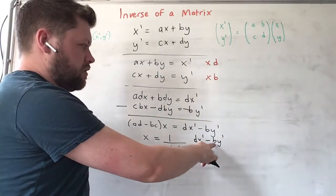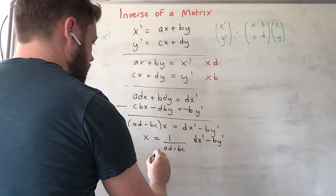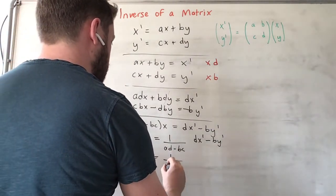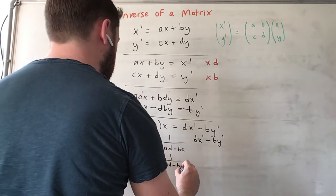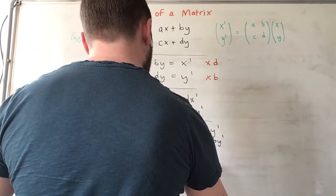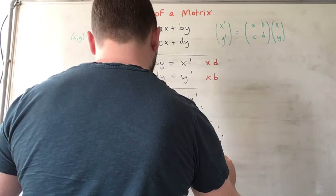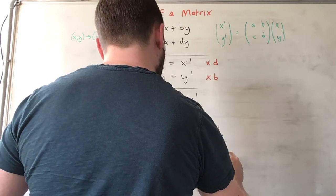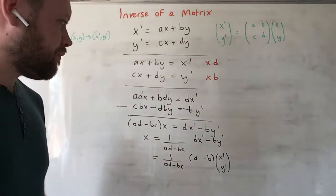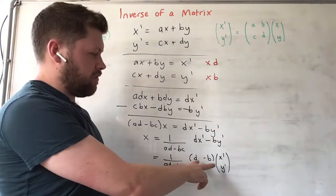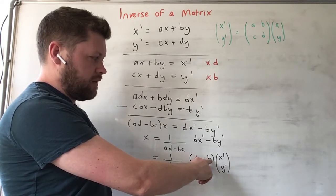What I want to do next is turn this into matrix notation to make things easier. That will equal 1 over (ad - bc)...